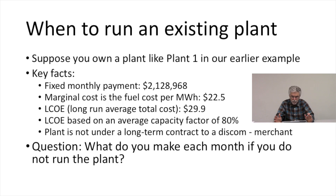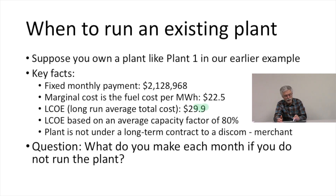Here are some key facts just to remind you. We have a fixed monthly payment of $2,128,968. The marginal cost is the fuel cost per megawatt hour, which is $22.50. The long run average total cost, or the levelized cost of energy, at our anticipated 80% capacity factor is $29.90, and our anticipated capacity factor is 80%. This plant is not under a long term contract to a DISCOM.